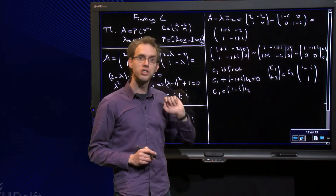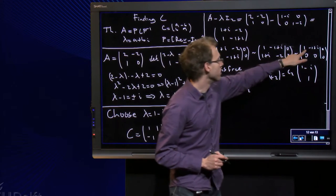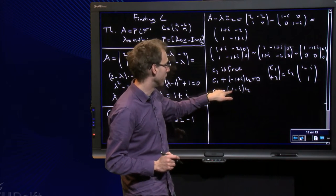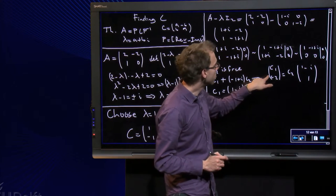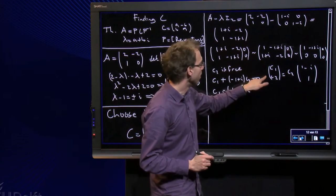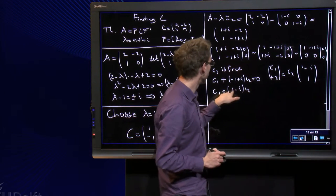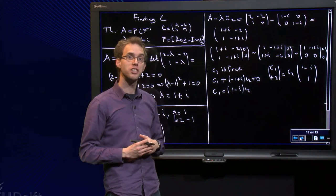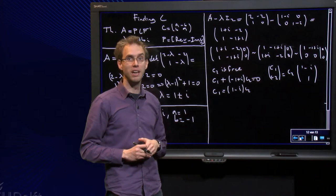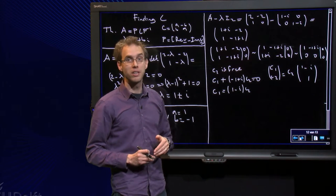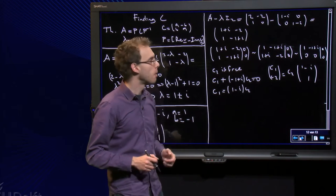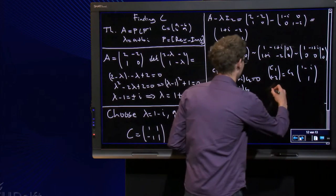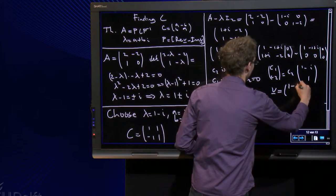So let's continue. I can choose c₂ free, then c₁ plus (-1+i) times c₂ equals zero, and I can solve for c₁: c₁ equals (1-i) times c₂. So there we have the solution of the linear system, and then we can choose any c₂ we like in order to get an eigenvector, as long as you don't pick zero of course. And the easiest choice is obviously c₂ = 1 to get eigenvector v = (1-i, 1).